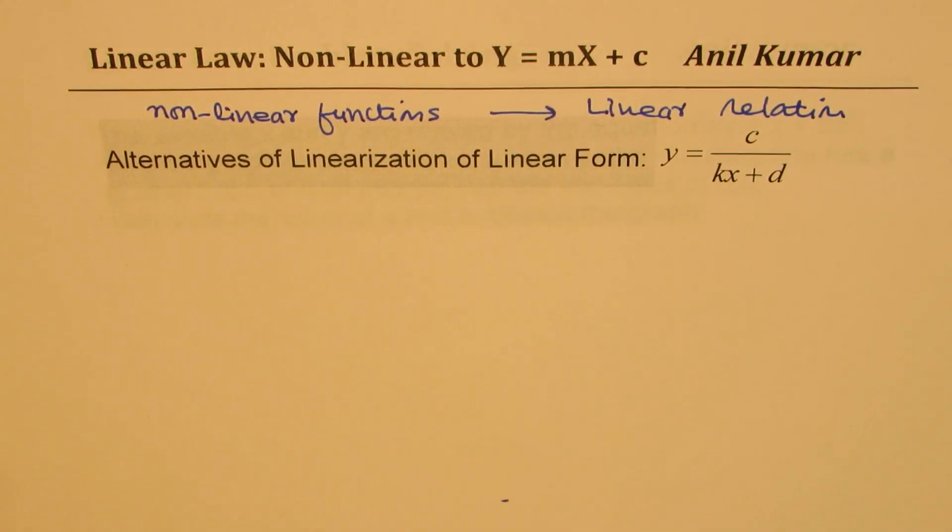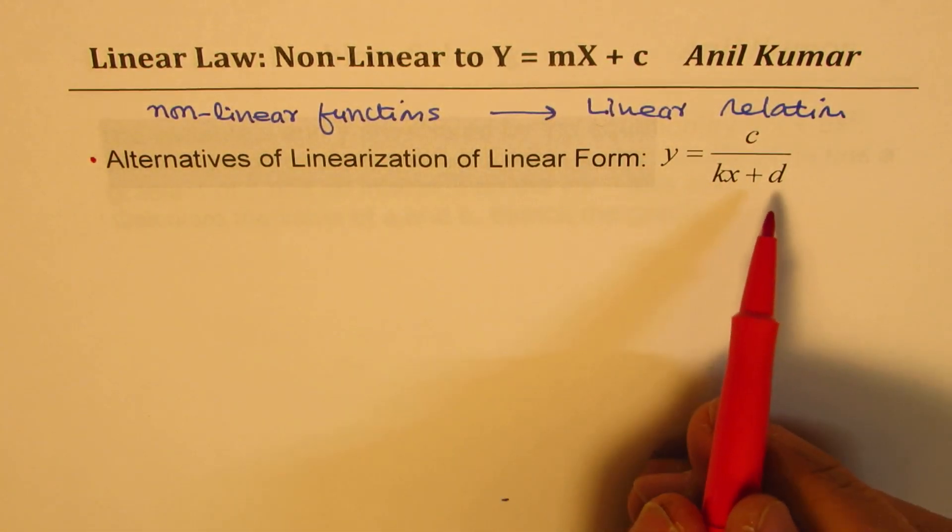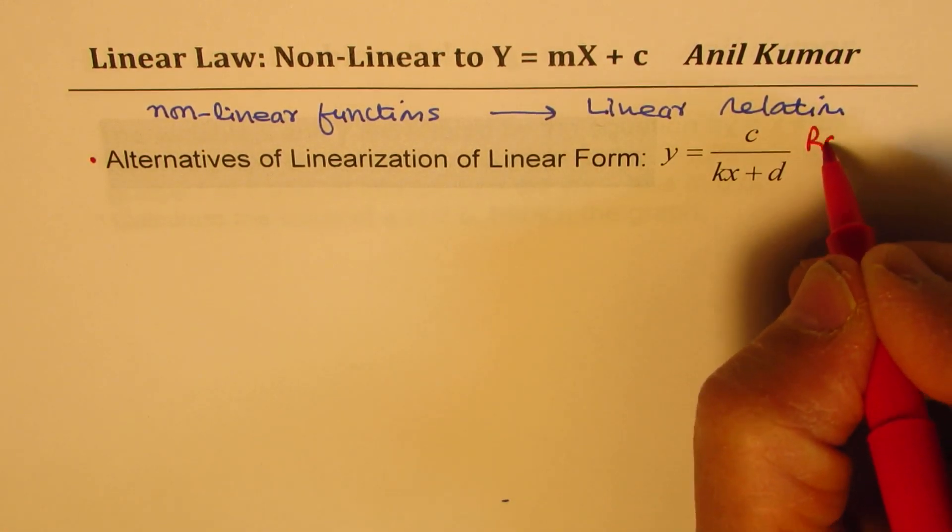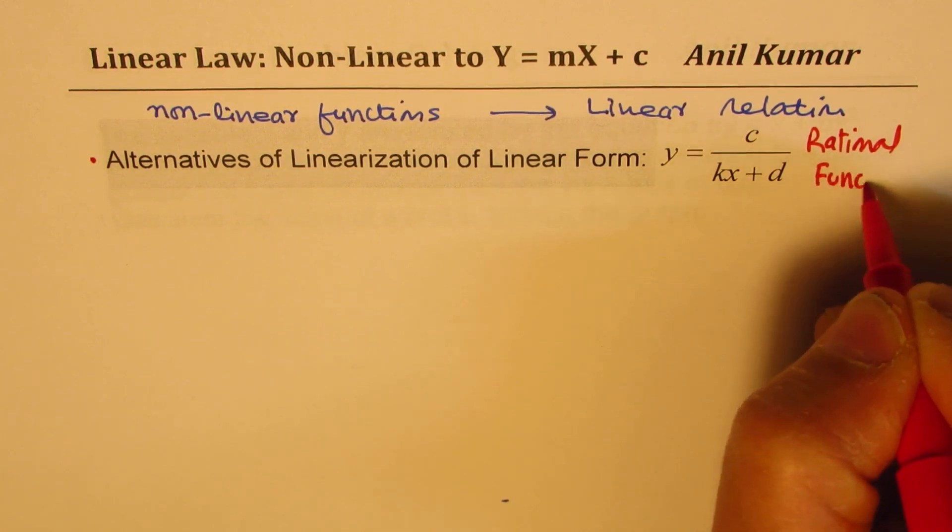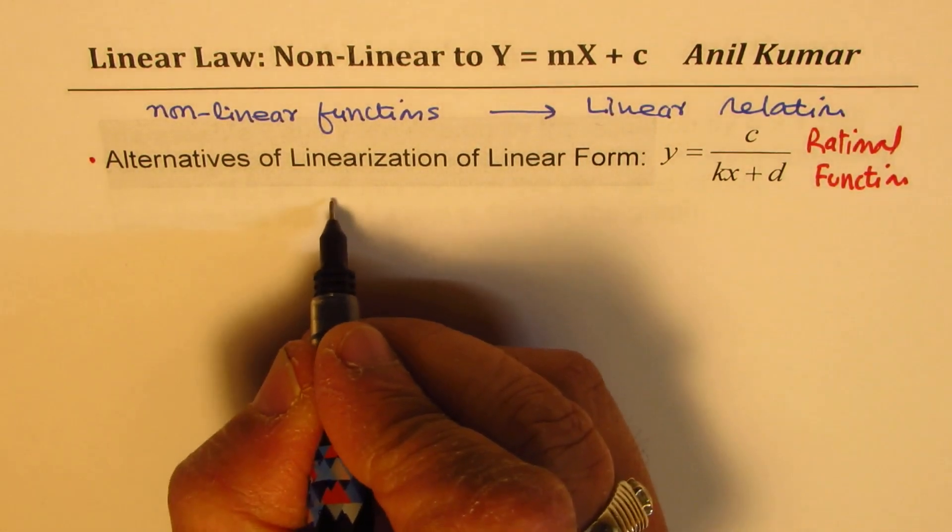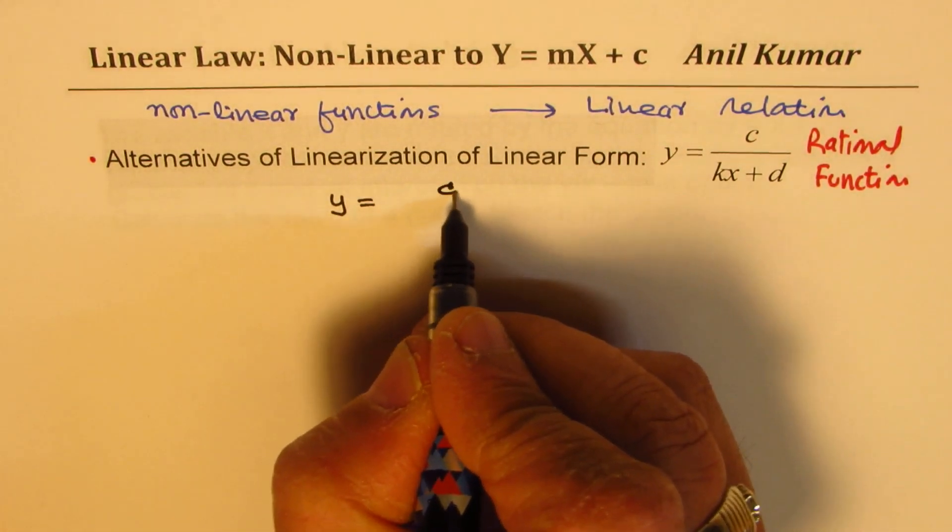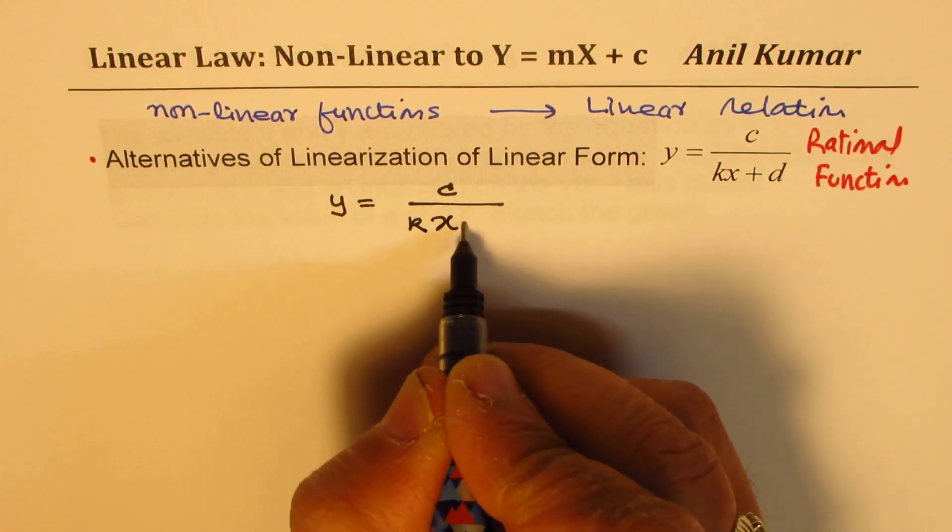Now, it is very important to understand that you could have different forms. So, in this particular exercise, we'll take an example with the rational function. And let us see how we can get different forms of the same non-linear rational function.